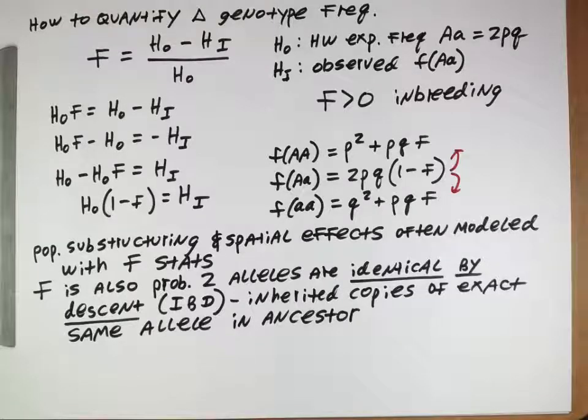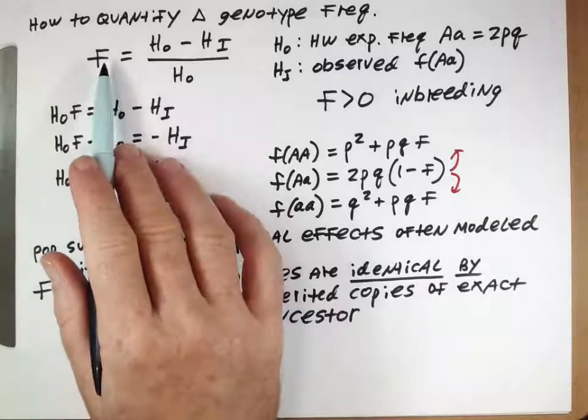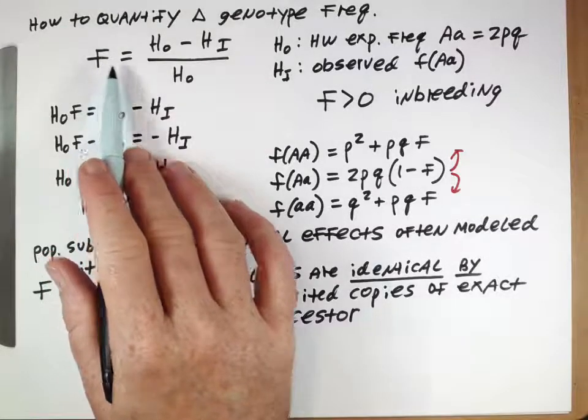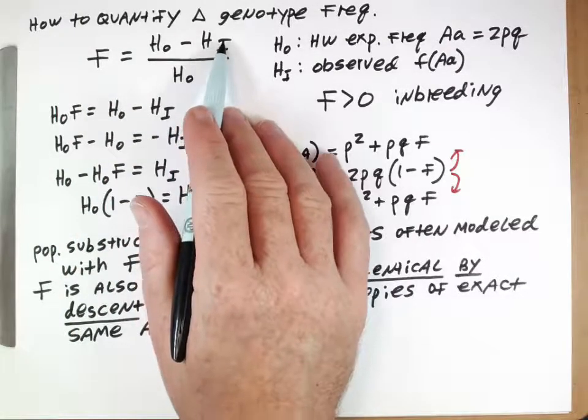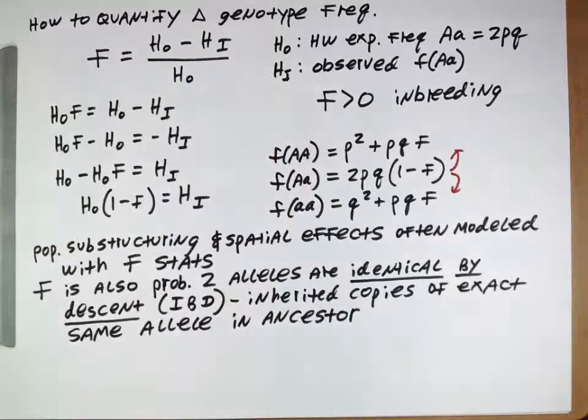If we think about what an F value of one would mean, an F value of one here would mean that there are no observed heterozygotes whatsoever. Every individual is homozygous. The most extreme possible form of result from inbreeding. Basically every individual has one of two alleles and those alleles will be the same as had been in some sort of ancestor.